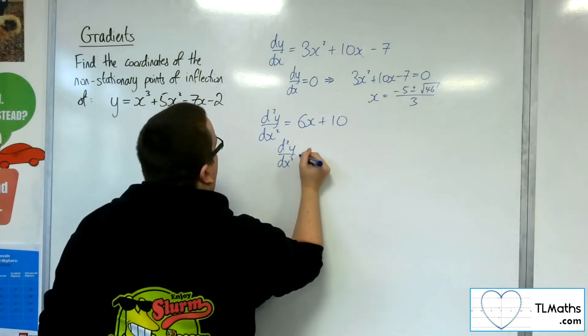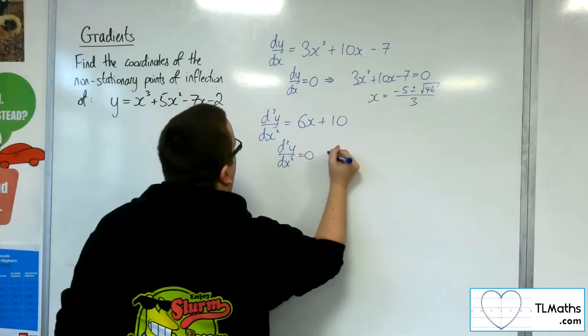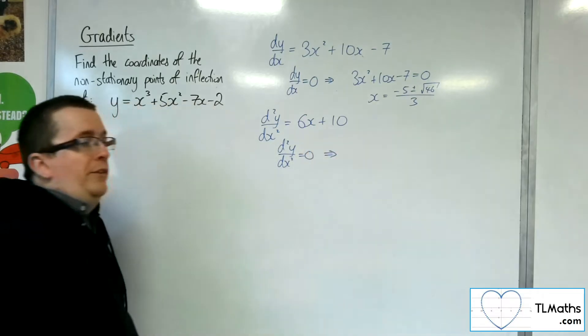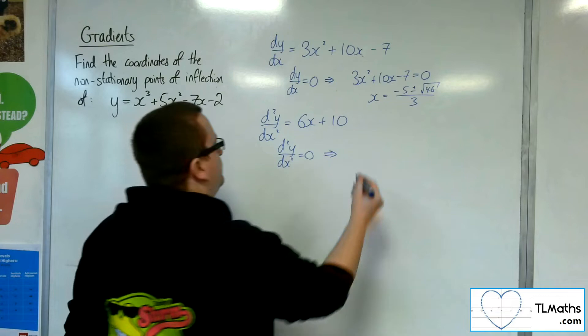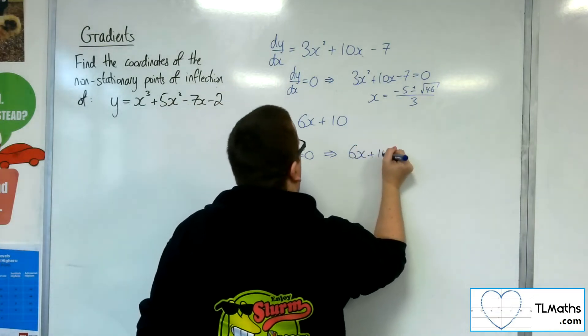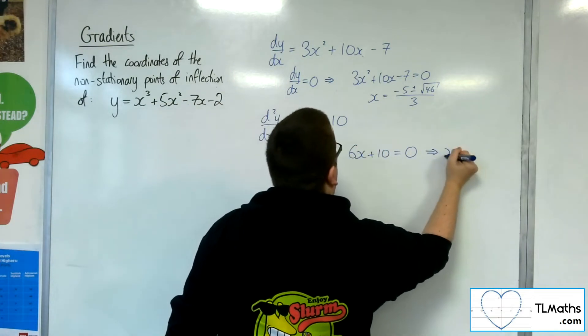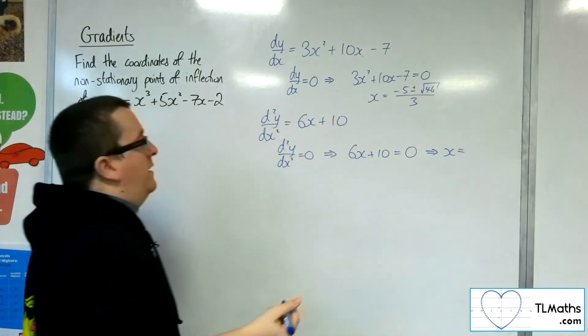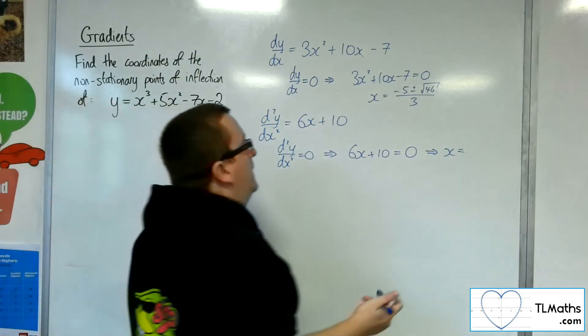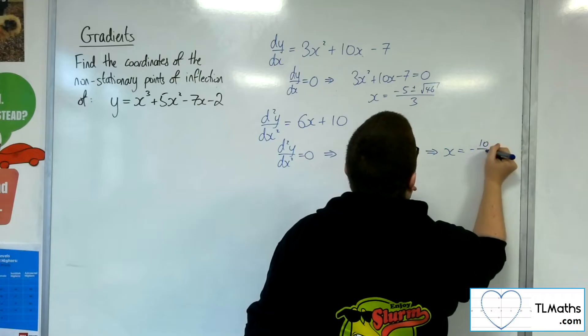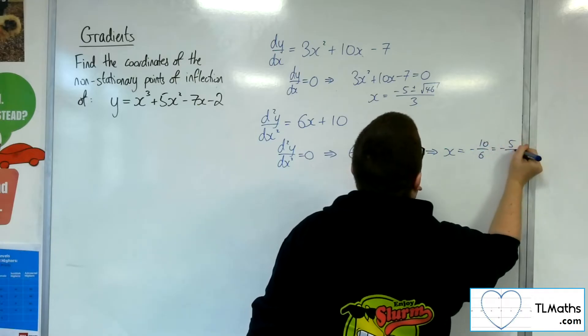Non-stationary points of inflection exist when the second derivative is 0. So, 6x plus 10 is 0. That means that x would be minus 10 over 6, or minus 5 thirds.